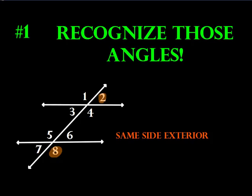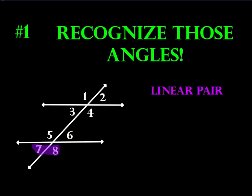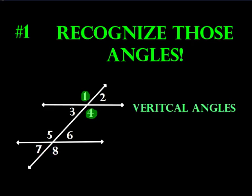We have same side exteriors — angles outside the parallel lines on the same side of the transversal, such as angles 2 and 8. And don't forget our friends from Unit 1: linear pairs, such as angles 7 and 8, and vertical angles, such as angles 1 and 4.